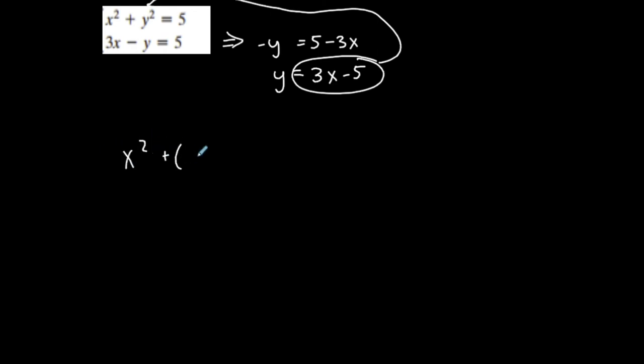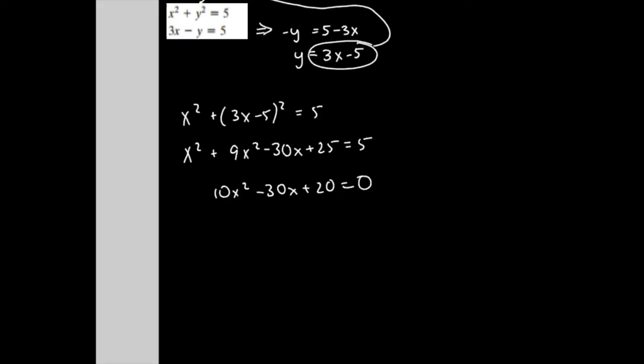x² + y, which is (3x - 5)² = 5. Perfect square trinomial. So multiply this out. I get 9x² - 30x + 25 = 5. 10x² - 30x plus 20 is 0. Quadratic equation. Will it factor? I can divide everything by 10. x² - 3x + 2. Nice. (x - 2)(x - 1). Factors beautifully. I get x = 2, and I get x = 1.